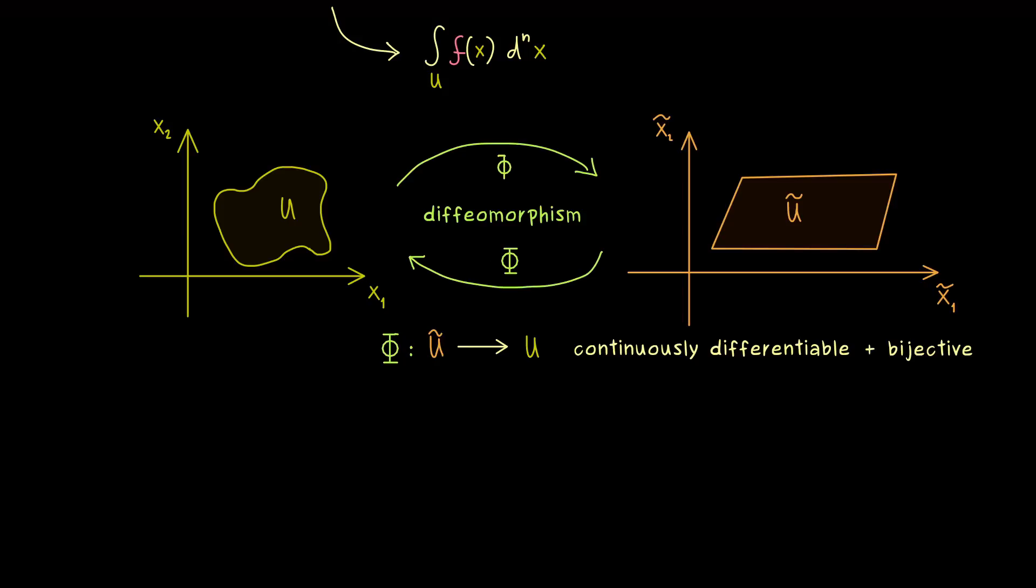And then this inverse should also be continuously differentiable. Hence Phi inverse is now a map from U into U tilde. More precisely what we have here is what we call a C^1 diffeomorphism. If you want to know more about diffeomorphisms I discuss them in my multivariable calculus series in part 21.